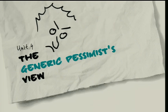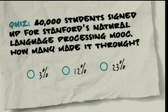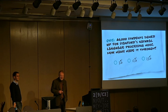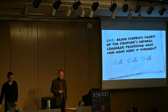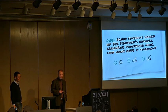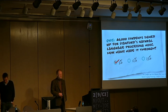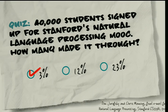But of course, that's just the optimist's view. Now the generic pessimist — again, a quiz. This year 40,000 students took that massive open course by Stanford on natural language processing. How many actually made it through the course? Three percent? Twelve percent? Twenty-three percent? You're right — just three percent.